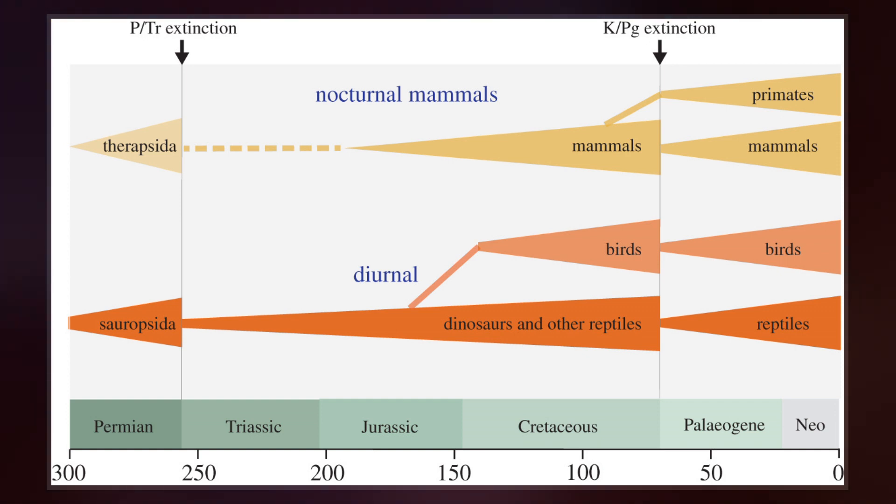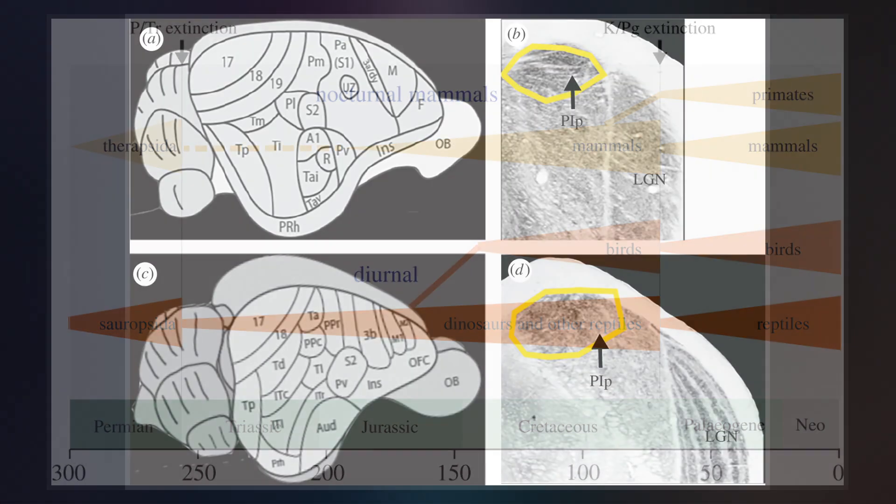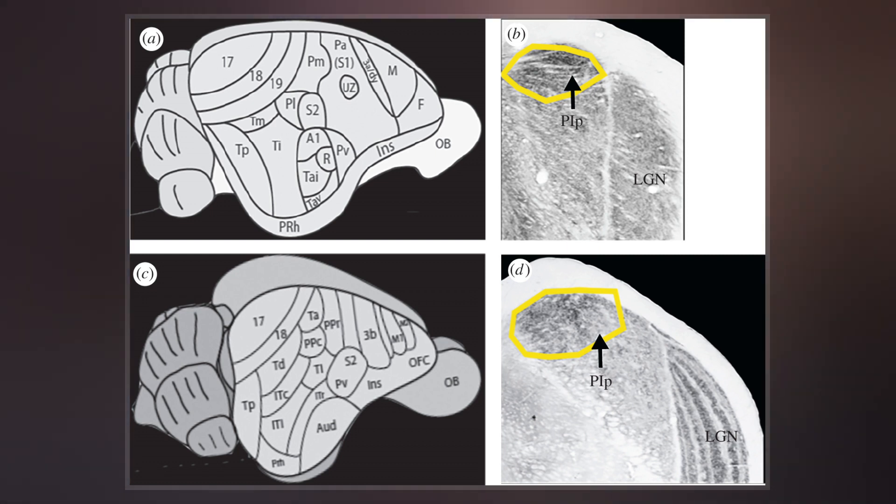Mammals evolved from synodonts, a group of superficially dog-like synapsids in the wake of the Permian-Triassic mass extinction.